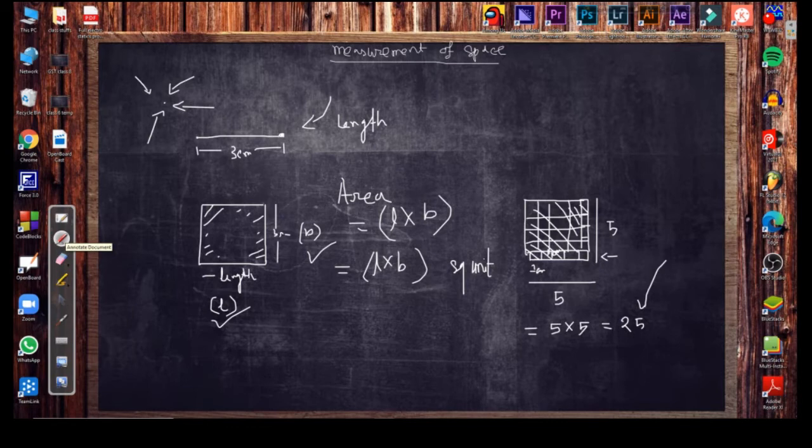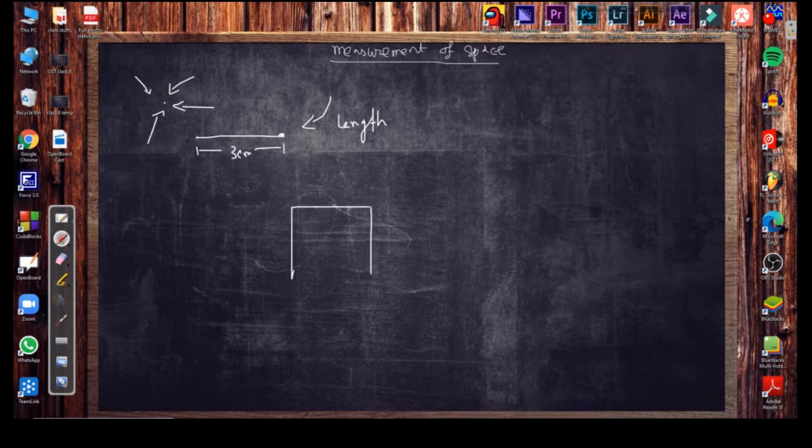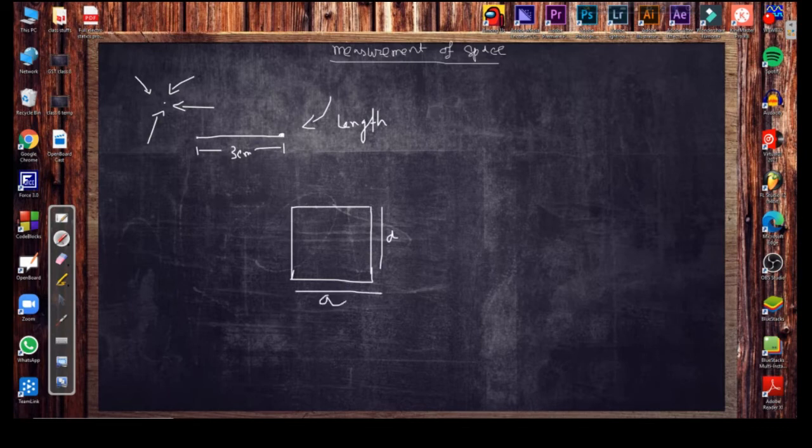Now we will think about it a little bit more. So in this case, if I give you equal sides on all sides - this is the same, this is also the same - that means all the sides are same. So what should be the area? That means a into a. If I multiply a with a, it will be the area.